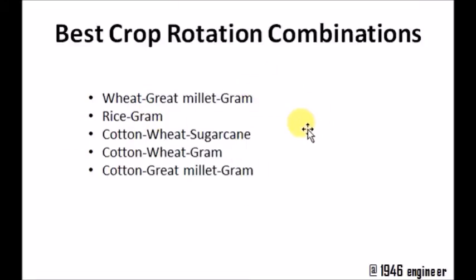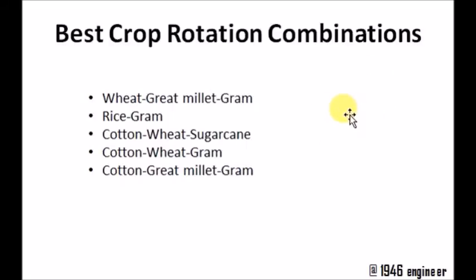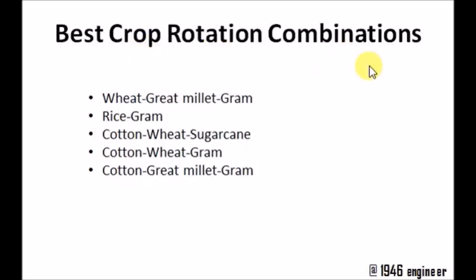In most of these combinations we find gram — but why? Grams and beans are called leguminous crops. Leguminous crops have nitrogen-fixing bacteria growing on their roots. What these nitrogen-fixing bacteria do is absorb atmospheric nitrogen and supply it to the soil, replenishing the soil's fertility. So leguminous crops play a very important role in crop rotation combinations.